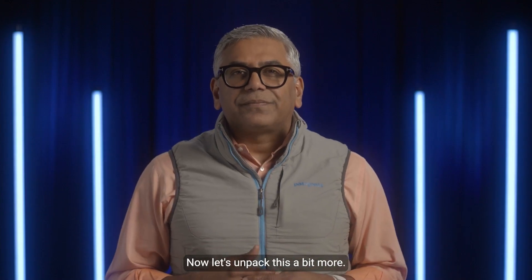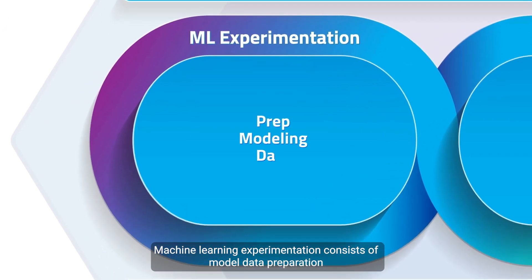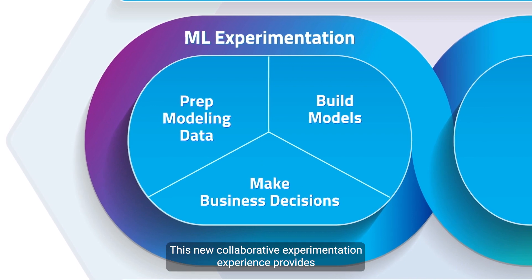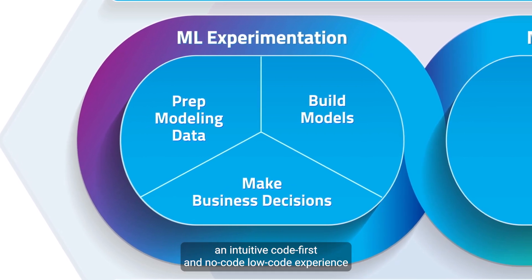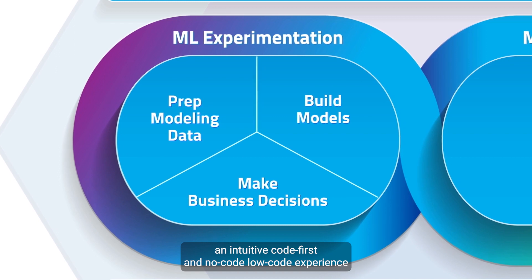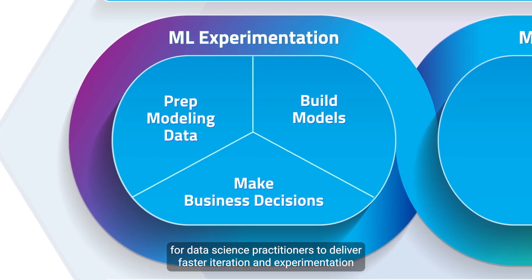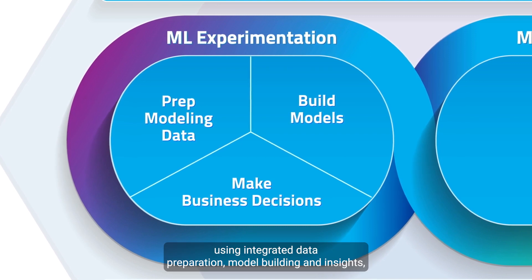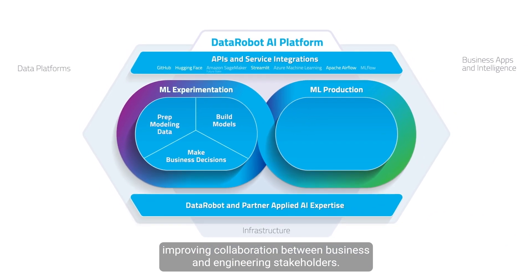Now let's unpack this a bit more. Machine learning experimentation consists of data preparation and model building to inform better business decisions. This new collaborative experimentation experience provides an intuitive code-first and no-code, low-code experience for data science practitioners to deliver fast iteration and experimentation using integrated data preparation, model building and insights, improving collaboration between business and engineering stakeholders.